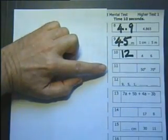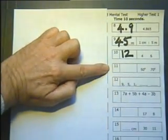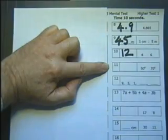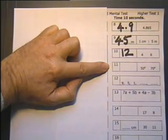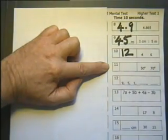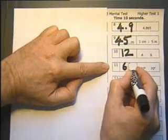Number 11: Two of the angles of a triangle are 50 degrees and 70 degrees. 50 add 70 is 120. The angles of a triangle always add up to 180. Therefore the third angle must be 60 degrees. 180 take away 120 being 60 degrees.